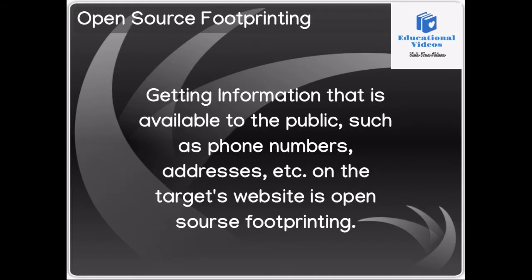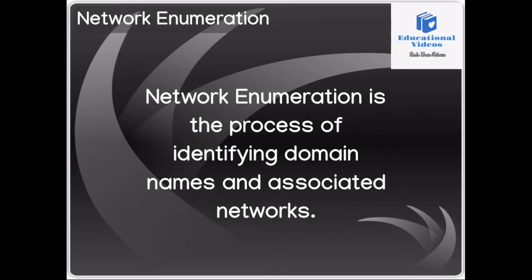The next technique is open source footprinting. Open source footprinting is the easiest and safest way to find information about a company — getting information that is available to the public, such as phone numbers and addresses on the target's website. Most of this information is fairly easy to get and is legal. Most companies post so much information about themselves on their website that hackers can use it, and interestingly, companies don't even know they are helping get themselves hacked.